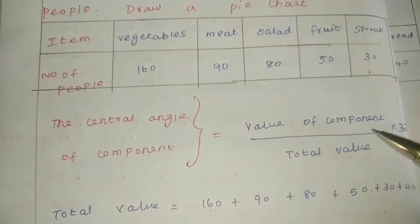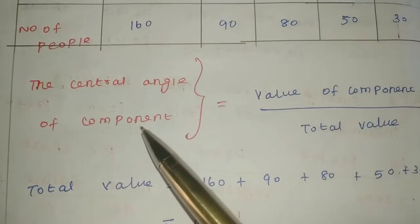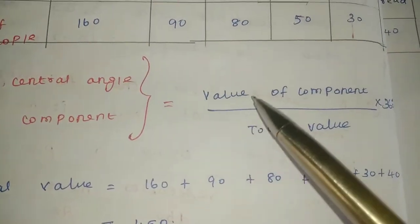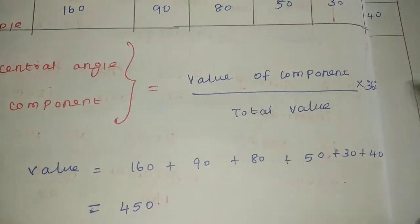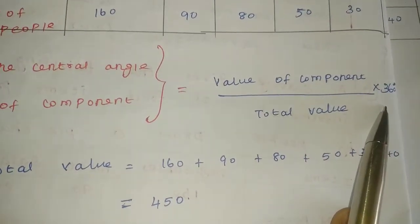First, the central angle of a component formula. The formula is: value of component divided by total value, multiplied by 360.